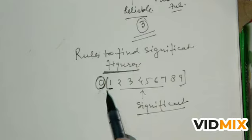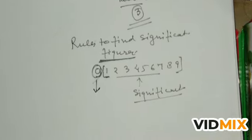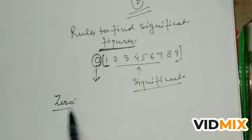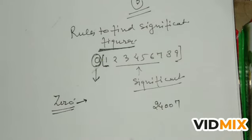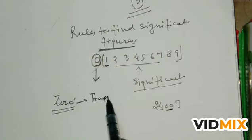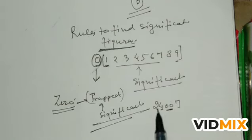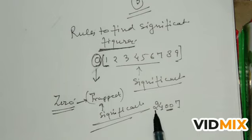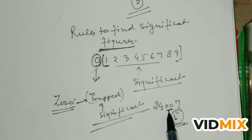Now what about zero? If we have a number like 2,400,007 — there are two zeros in between two non-zero digits. These are called trapped zeros. If zeros are trapped between non-zero digits, then they are significant. So all non-zero digits are significant, and zeros which are trapped are also significant. In this number, count: 1, 2, 3, 4 — there are 4 significant figures (the trailing zeros are not counted).